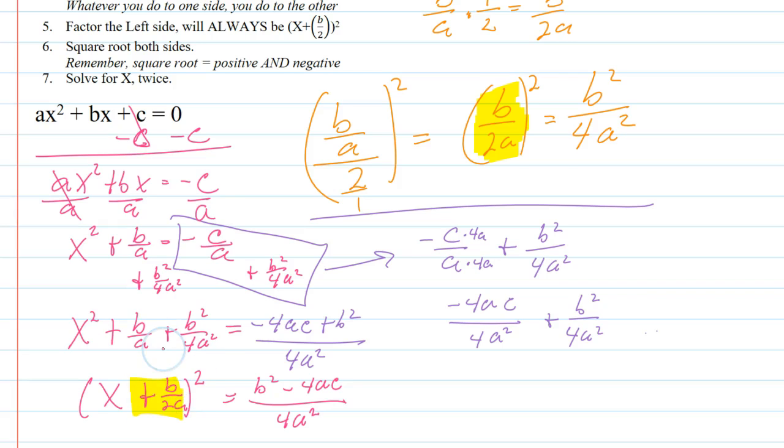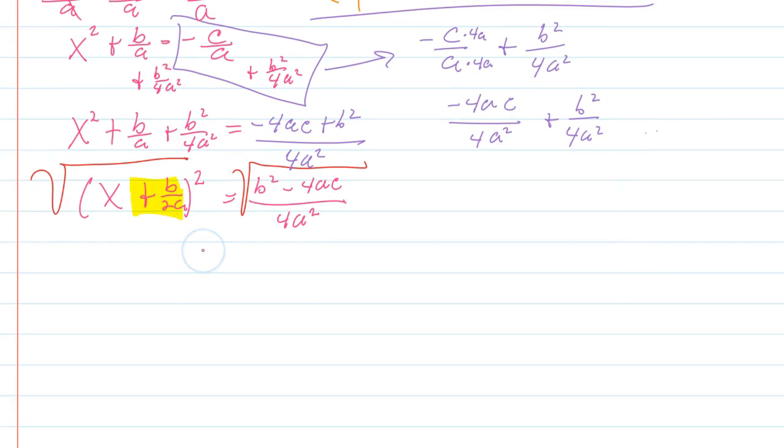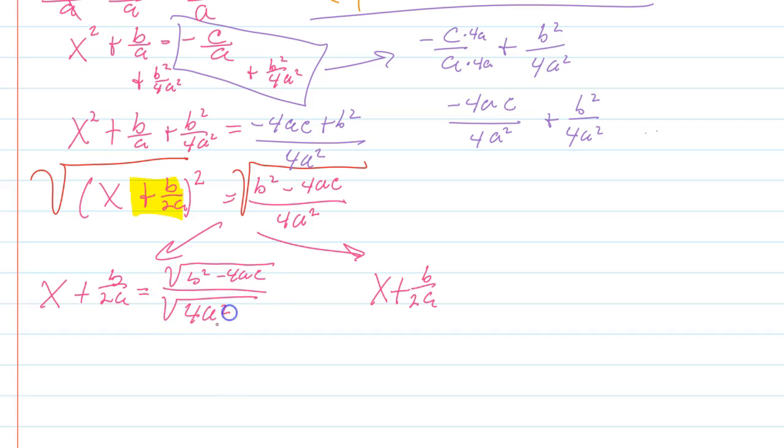Now I have a perfect square on the left hand side, so I can square root both sides. When I do that, I'll get a positive and a negative version: x + b/2a is equal to a positive and a negative square root of (b² - 4ac) all over the square root of 4a². Well, can I take the square root of 4a²? Yes. The square root of 4 is 2 and the square root of a² is just a. So I don't need to write the square root symbol. I can actually go ahead and simplify it. And on the right hand side I'm going to have a negative version of the same thing.